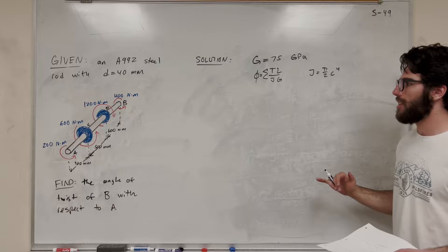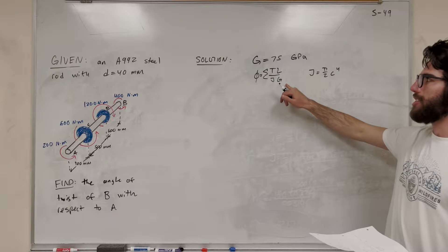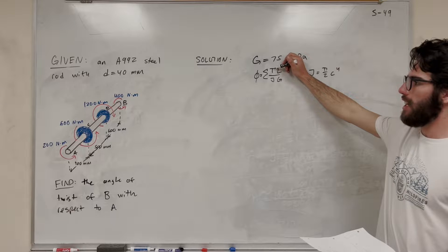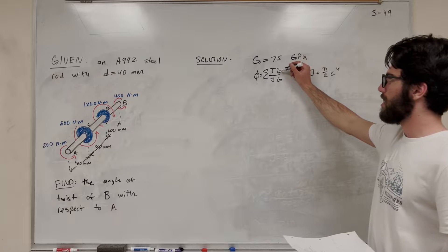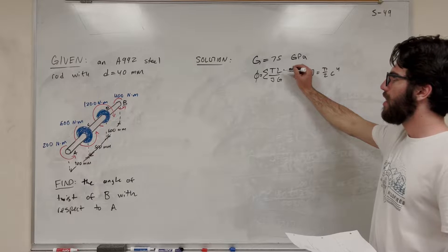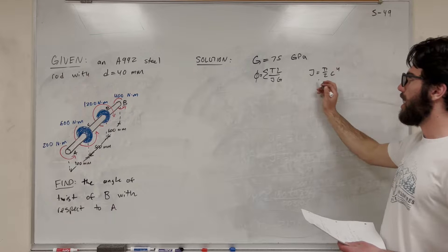We're going to be using two equations here. The angle of twist itself is the sum of TL over JG, right? The internal torque in each segment, so we have to look at AC, CD, and DB. We have to add those three segments out, times the length of that segment, over JG, which is going to be constant for the entire rod.